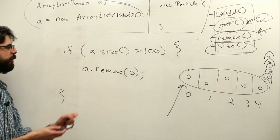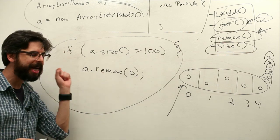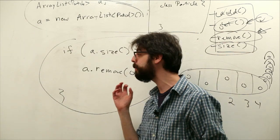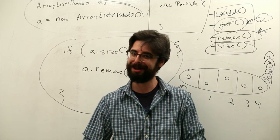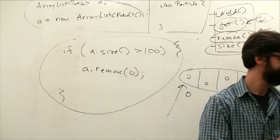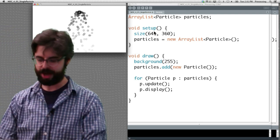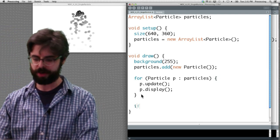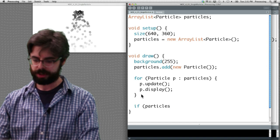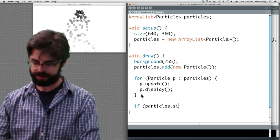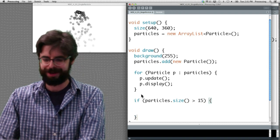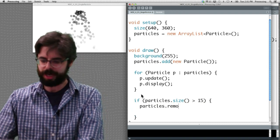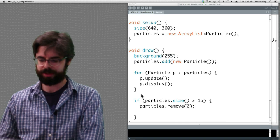In this case I'm saying it's gotten very big, find the oldest particle and delete it. So a.remove 0. This is a first little quick example of how we might keep an ArrayList from getting too big. Let's go back to our example over here. Let's add that bit of code.